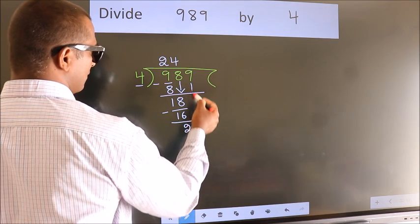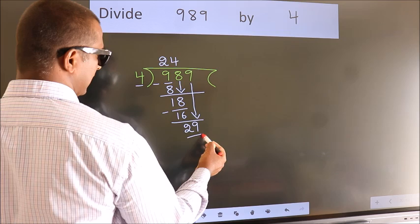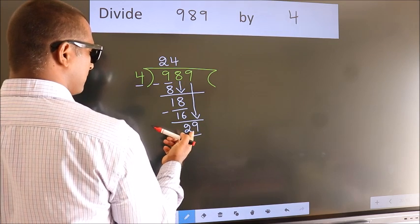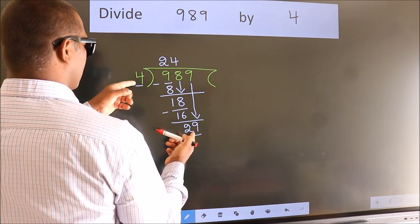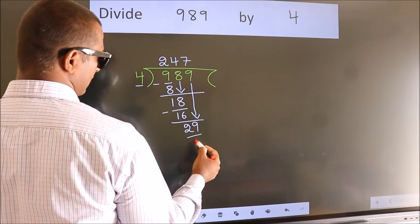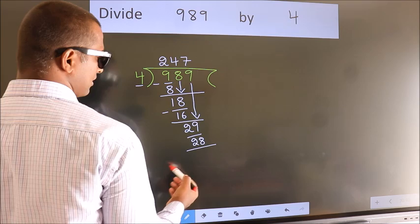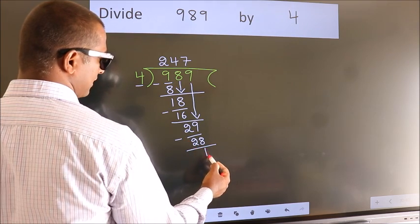After this, bring down the beside number. 9 down. So, 29. A number close to 29 in 4 table is 4 sevens, 28. Now we subtract. We get 1.